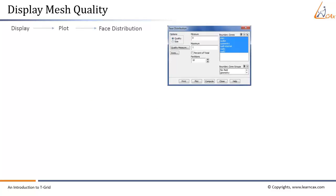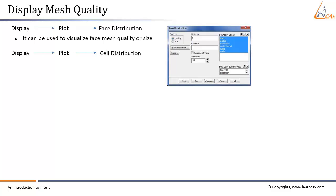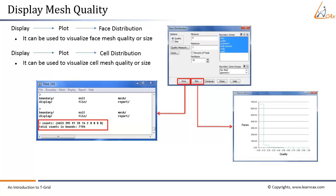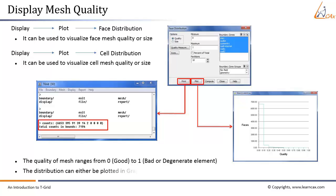Tools for inspecting mesh quality include plotting face and cell distributions. To plot face distribution, select Display > Plot Face Distribution. To plot cell distribution, select Display > Plot Cell Distribution. The distribution can be plotted in the graphics display window or printed in the console window. Mesh quality ranges from 0 to 1, where 0 represents a good element and 1 represents a bad or degenerate element.